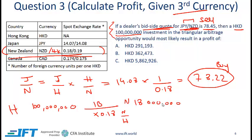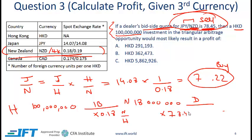We have 18 million New Zealand dollars. We've established we need to sell New Zealand dollars to the dealer — the dealer bid of 78.45 was higher than 78.22. In the dealer market we are selling New Zealand dollars and receiving Japanese yen. We are selling the base currency so we use the bid-side rate: 18 million NZD × 78.45 JPY/NZD. New Zealand dollars cancel out, giving us 18 million × 78.45 = 1,412,100,000 Japanese yen.